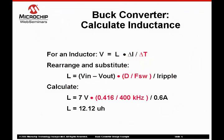Starting with the basic equation for current flow through an inductor, V equals L·di/dt, we rearrange the terms to calculate L so that L equals V·dt/di. For the design example, the calculated inductor value is 12 microhenries. From a catalog, we can select a 12 microhenry, 3-amp inductor that has a resistance of 0.037 ohms.